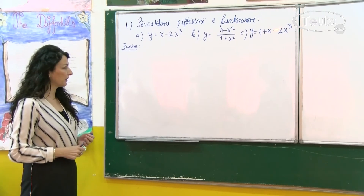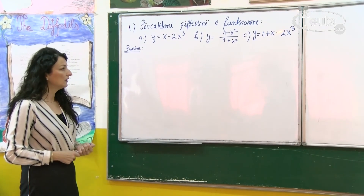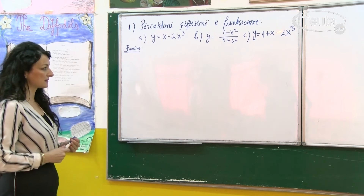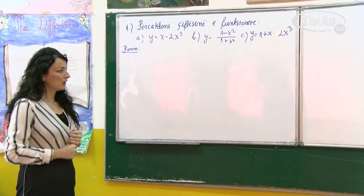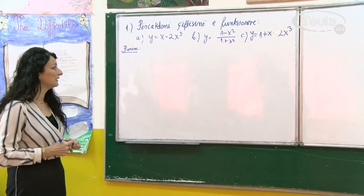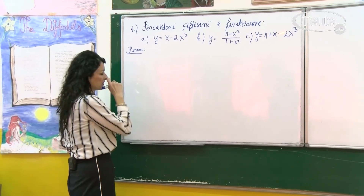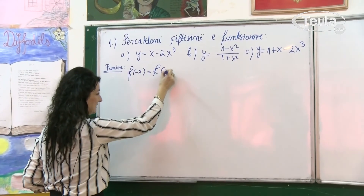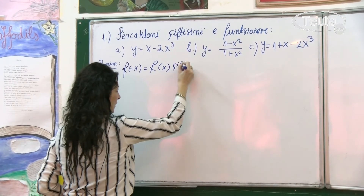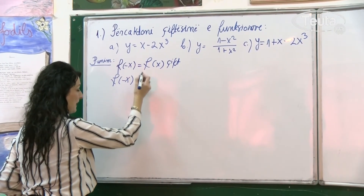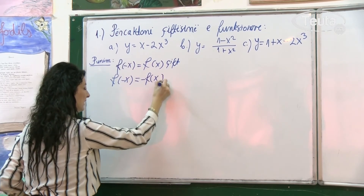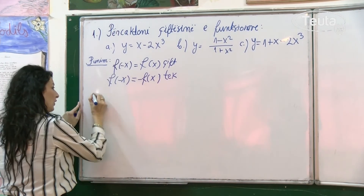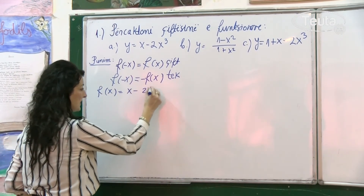Kemi në a funksionin y = x - 2x³, në b kemi funksionin në formë thyese y = (1 - x⁴) / (1 + x⁴) / (1 + x³), dhe në c kemi rastin y = 1 + x - 2x³, pra një trinom. Atëherë të fillojmë me rastin e parë. Ne duhet të shqyrtojmë qiftësinë dhe të përsërisim rregulën: nëse f(-x) = f(x) atëherë funksioni është qift; kurse nëse f(-x) = -f(x), funksioni është tek. Funksioni jonë f(x) = x - 2x³.